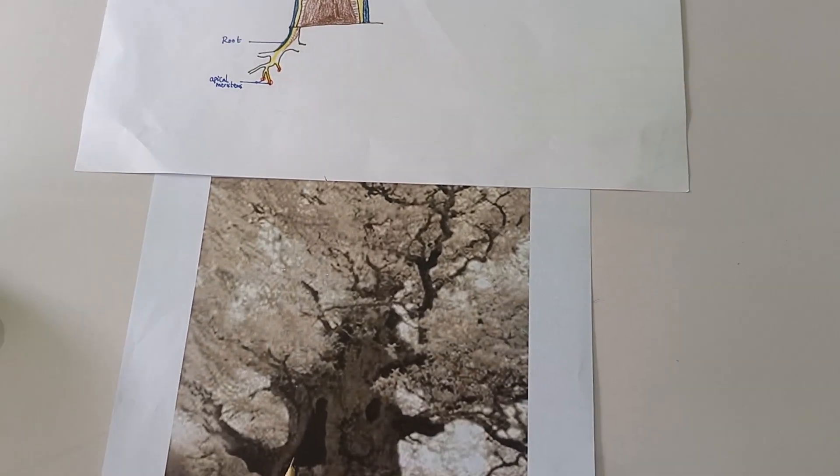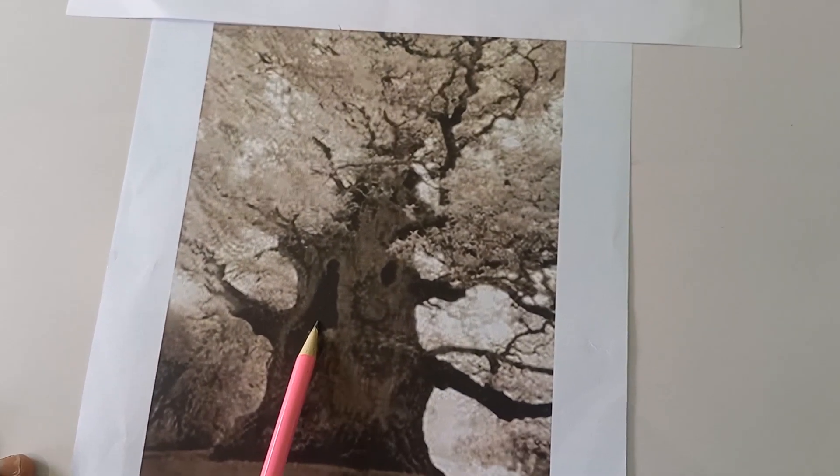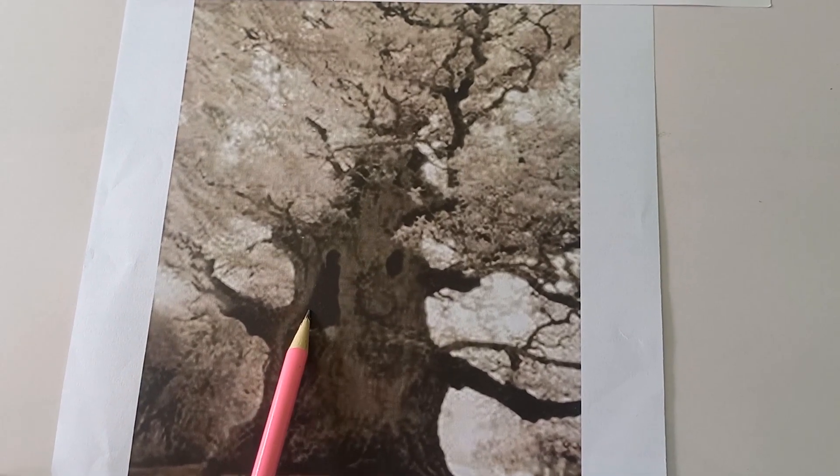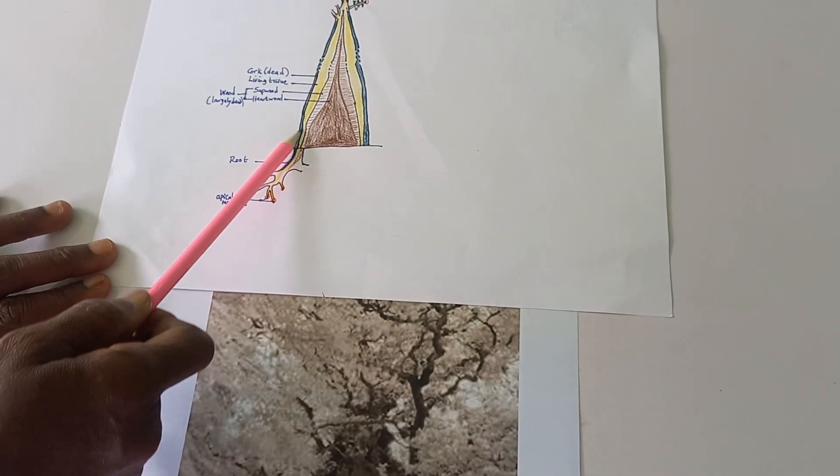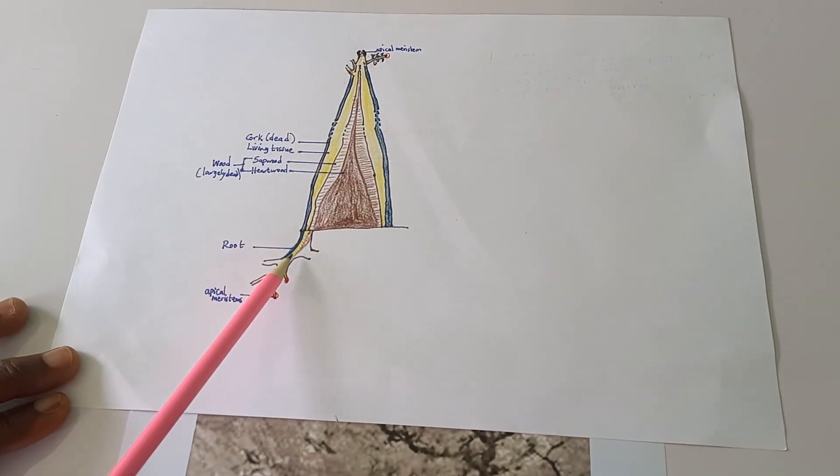There should also be said about the fact that part of the tree can be dead. Like we have holes here, part of the tree can be dead. But there is living tissue in some parts of the tree.